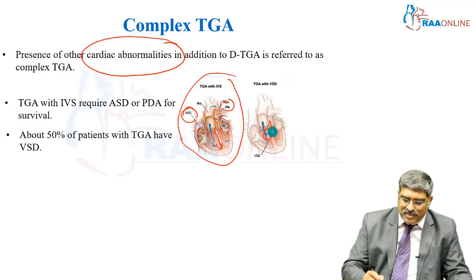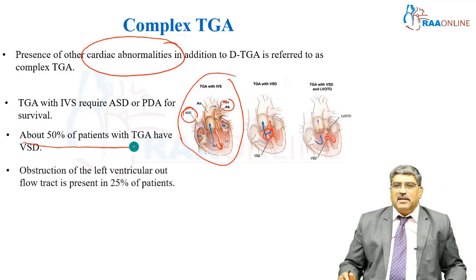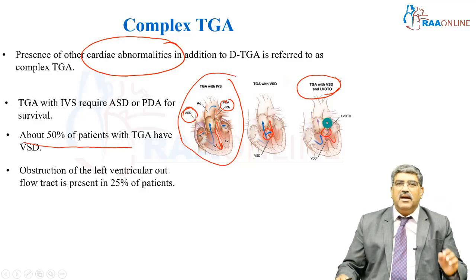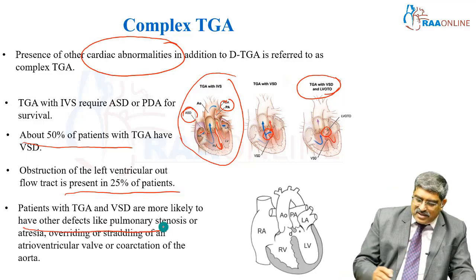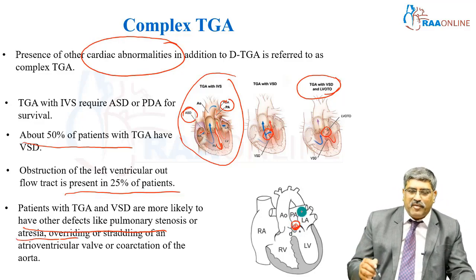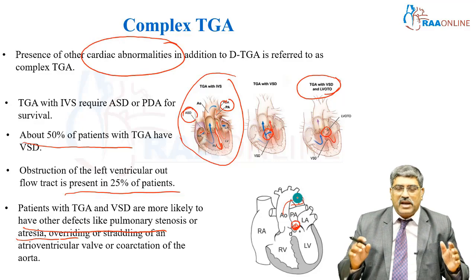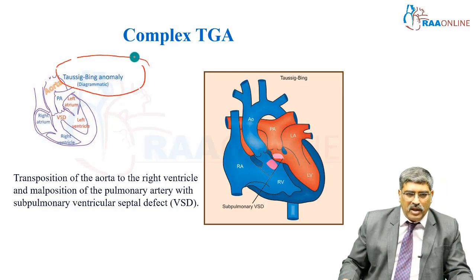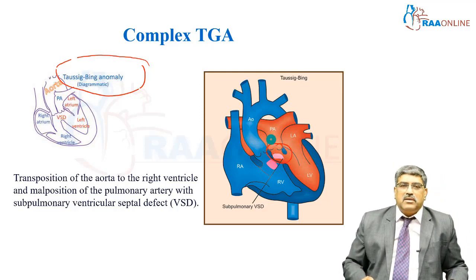The next type is TGA with a VSD, present in about 50% of patients. The third type is TGA with VSD and left ventricular outflow tract obstruction, present in about 25% of patients, with defects like pulmonary stenosis or pulmonary atresia, absent pulmonary valve, straddling of the aorta, or coarctation of the aorta. An important anomaly associated with TGA is the Taussig-Bing anomaly, which features a small portion of pulmonary artery with a sub-pulmonic ventricular septal defect.